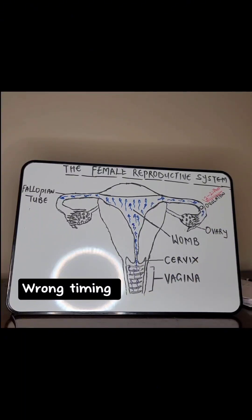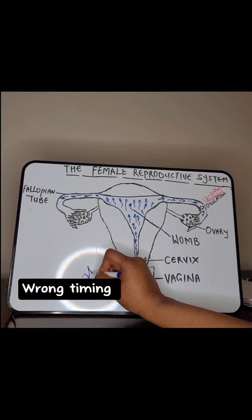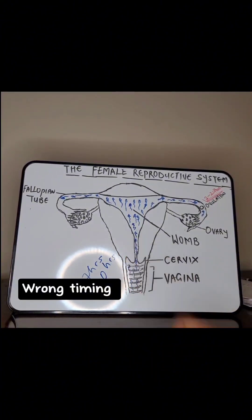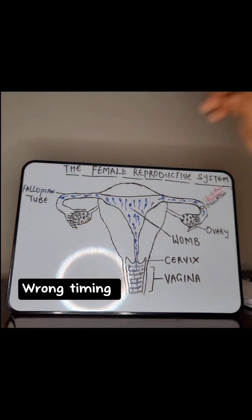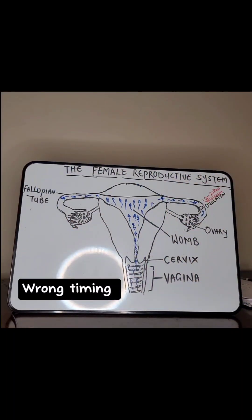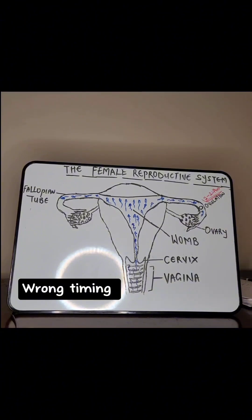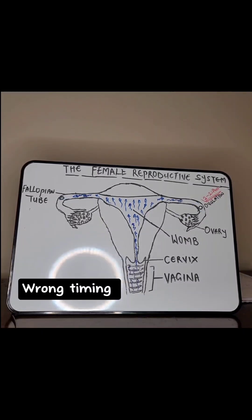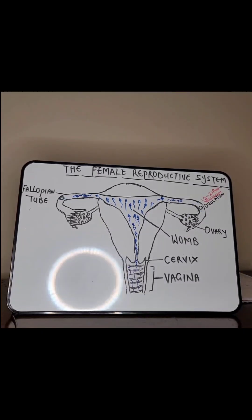Capacitation is what enables sperm cells to fertilize the egg. If they are not capacitated, they cannot fertilize it. This process can take as long as seven to ten hours. So you need to time yourself in a way that even after the sperm cells undergo all their processes, they will still be able to meet the egg and fertilization will take place.